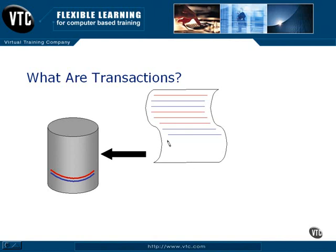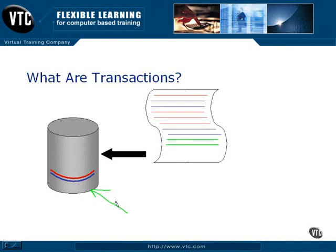There's something else a transaction log can do. Say another transaction — a green transaction — gets written in. This is the start of it, this is the second part, but the third part fails and nothing ever completes. We want those incomplete transactions to just disappear, so we can simply roll them back out of the transaction log. For the time these transactions are in the log, when I run a select against the database, it looks in the database itself for data, and it looks in the transaction log, combining those together and sending the result set back.